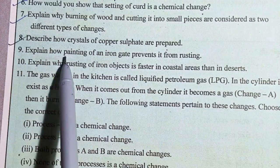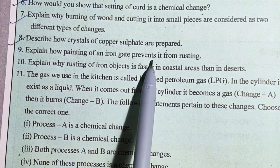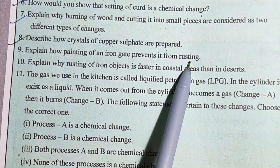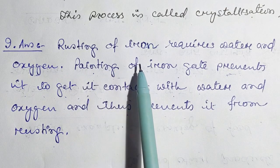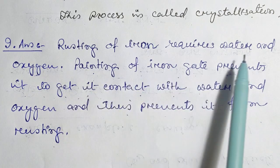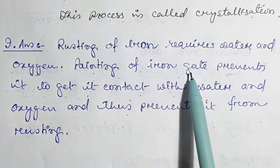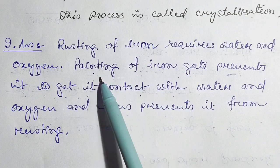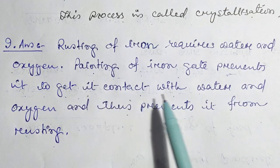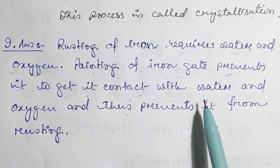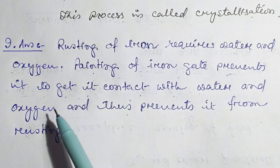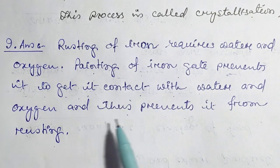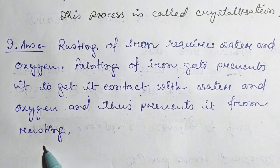Question number 9: Explain how painting of an iron gate prevents it from rusting. Rusting of iron requires water and oxygen. Painting the gate prevents it from coming into contact with water and oxygen, thus preventing rust.